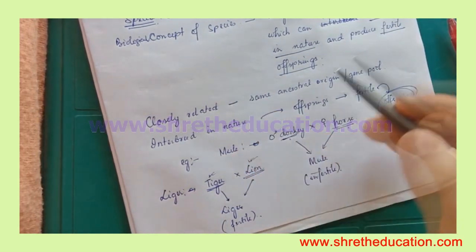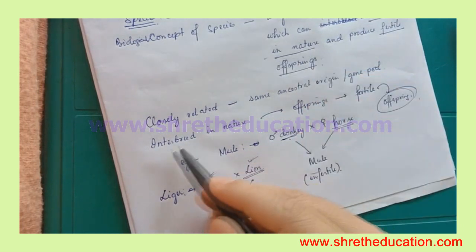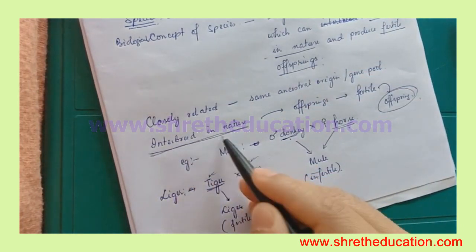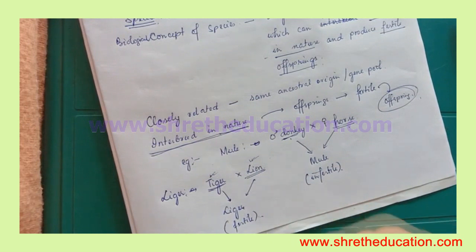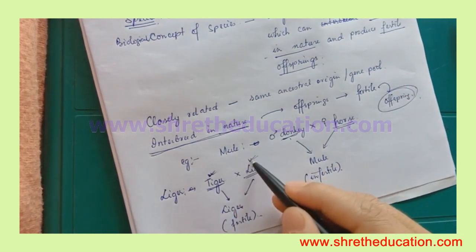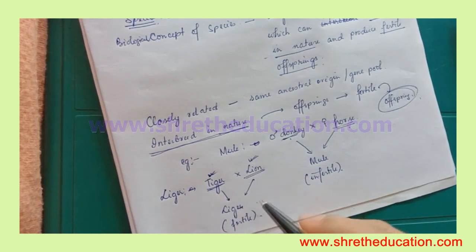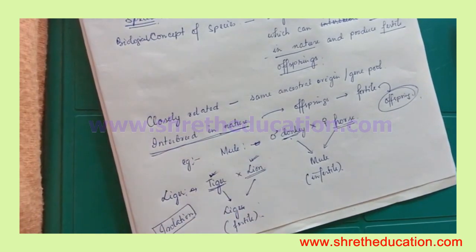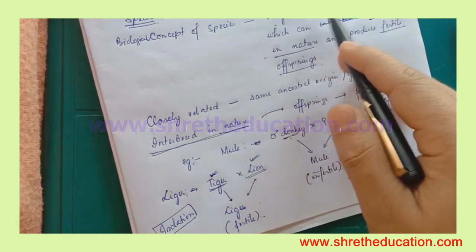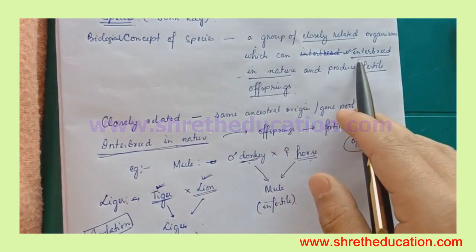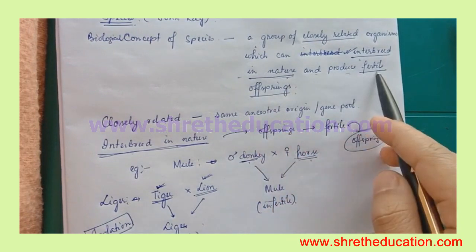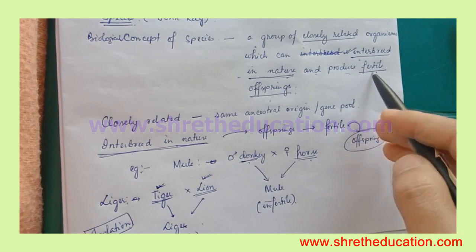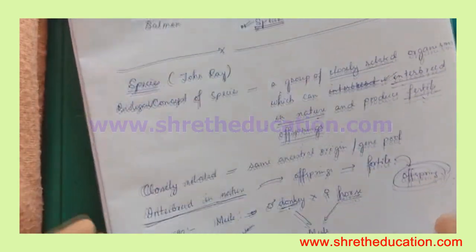The biological concept of species requires that organisms interbreed in nature. If we are using a hybrid, isolation occurs. So the concept of species is: a group of closely related organisms which can interbreed in nature and produce fertile offspring.